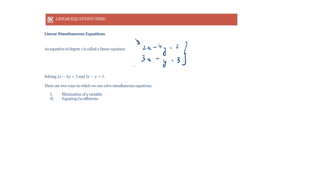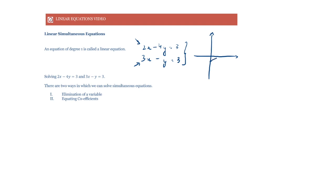Think about it graphically. Linear equations represent lines on the x-y axis. So where will this line be? This line has a positive slope — the slope is one-half, and the y-intercept is minus 3 by 4, so it will be somewhere here with slope one-half.